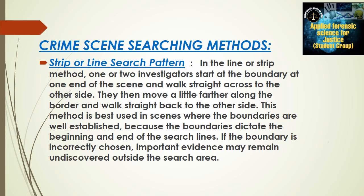Crime scene searching methods — first, the strip or line search pattern: one or two investigators start at the boundary at one end of the crime scene and walk straight across to the other side, then move a little farther along the border and walk straight back. This method is best used where boundaries are well established. If the boundary is incorrectly chosen, important evidence may remain undiscovered. For example, starting from point A, we walk straight to the front wall, take a turn, return a little to the side, and continue in the step method.